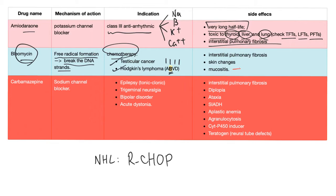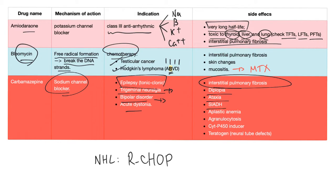There is another drug that causes mucositis — methotrexate. Carbamazepine is a sodium channel blocker and an anti-epileptic drug, also used in trigeminal neuralgia (also known as tic douloureux, a French name), bipolar disorder, and acute dystonia. Side effects include pulmonary fibrosis, diplopia, ataxia, SIADH, aplastic anemia, and agranulocytosis. It is an inducer of the cytochrome P450 enzyme and is teratogenic, causing neural tube defects.